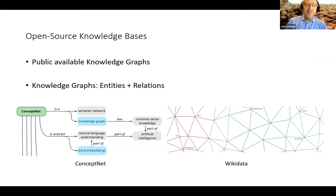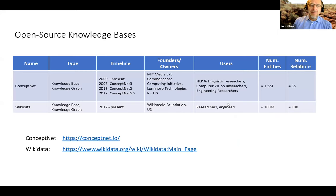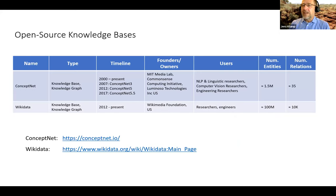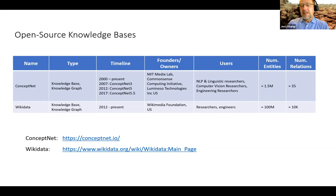Then we have open source knowledge bases, where we aimed for publicly available knowledge graphs. We looked at ConceptNet and Wikidata in more detail. ConceptNet is a knowledge graph with 1.5 million entities, mainly used by natural language processing, linguistic, computer vision, and engineering researchers. Wikidata, extracted from Wikipedia, has more than 100 million entries — very rich knowledge bases we can use for our work.